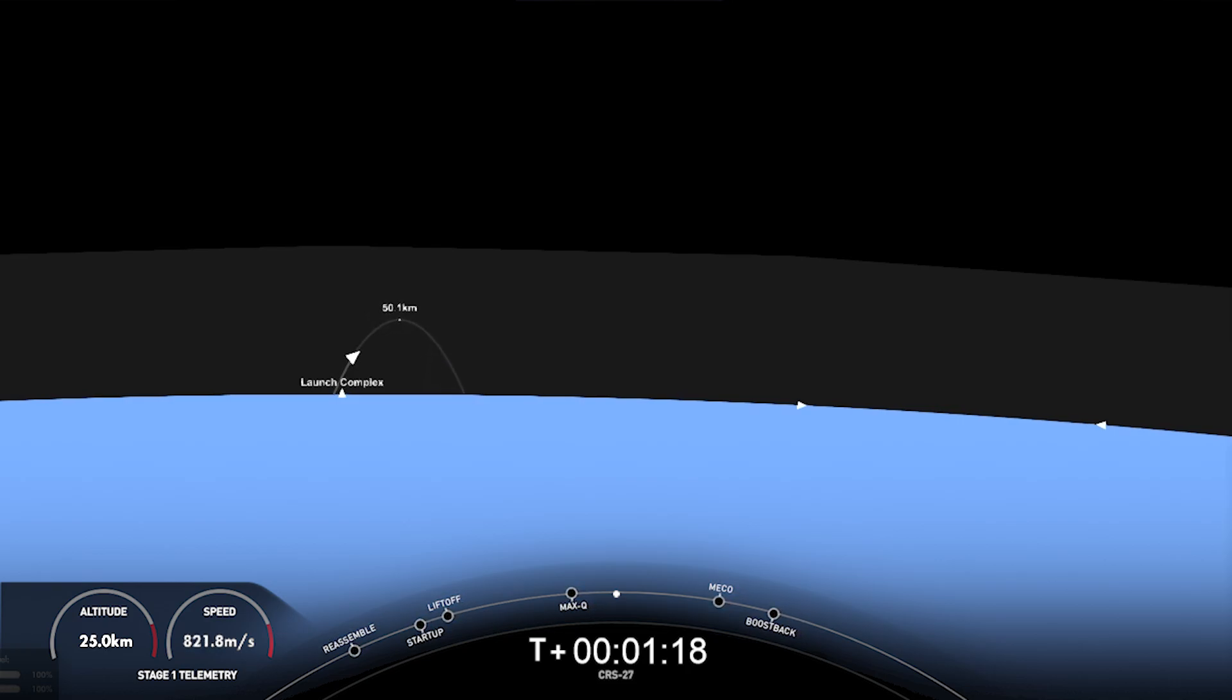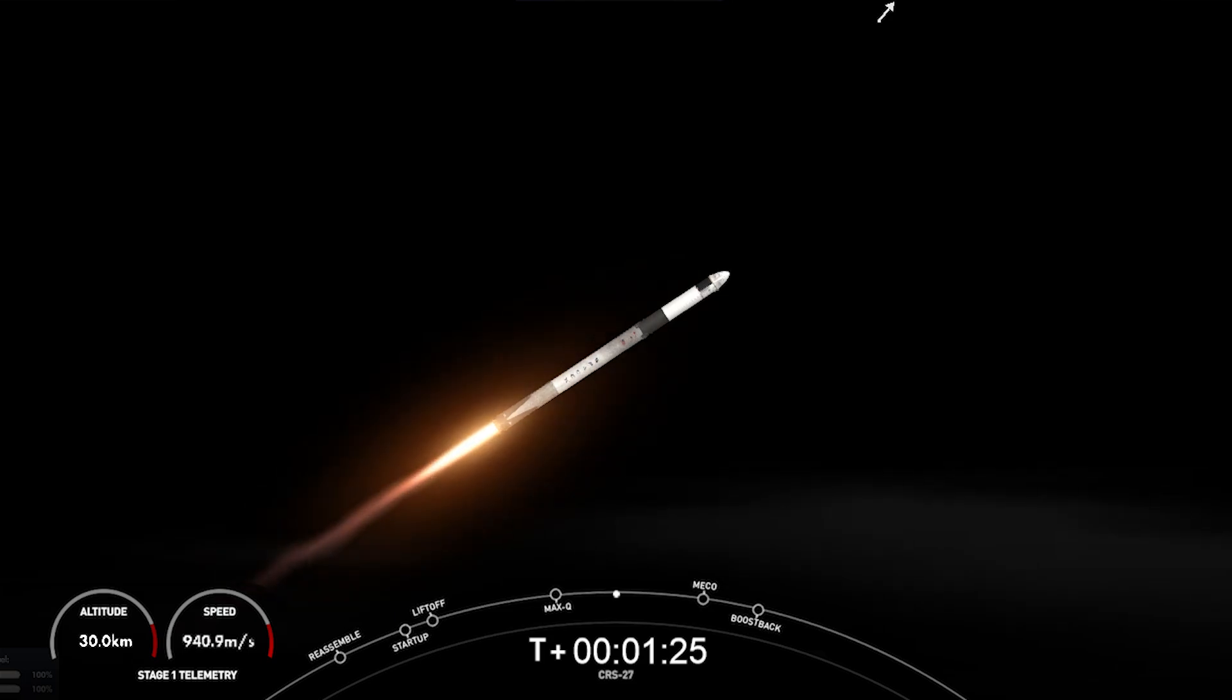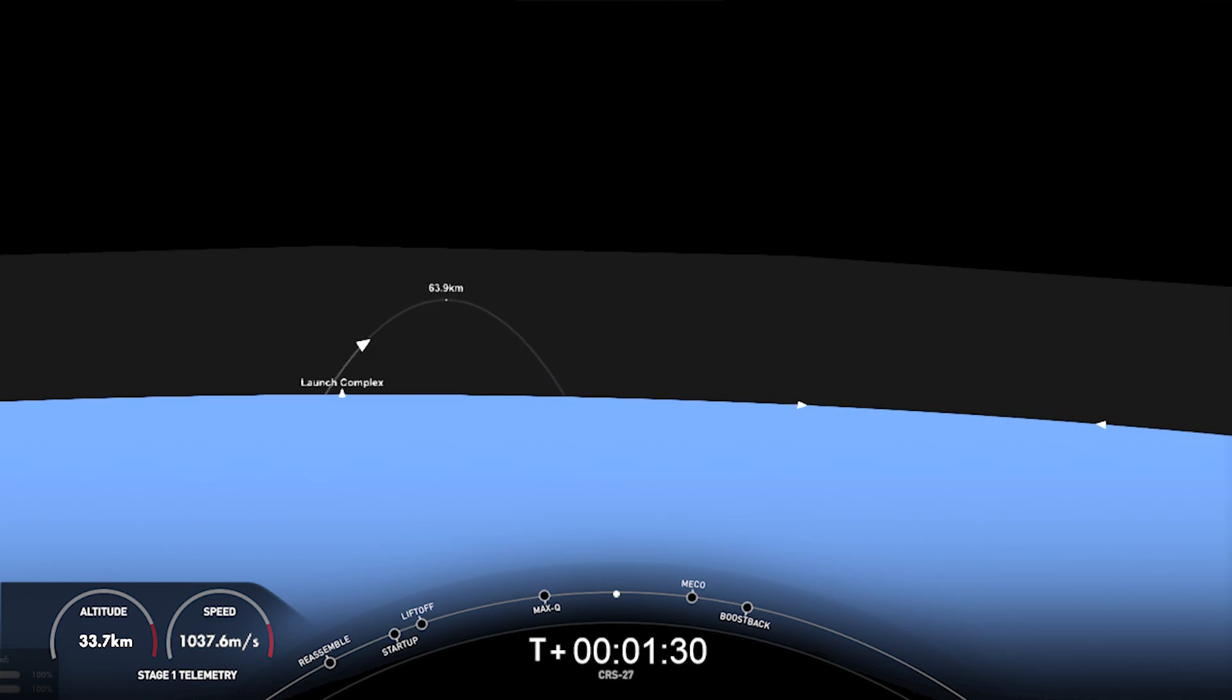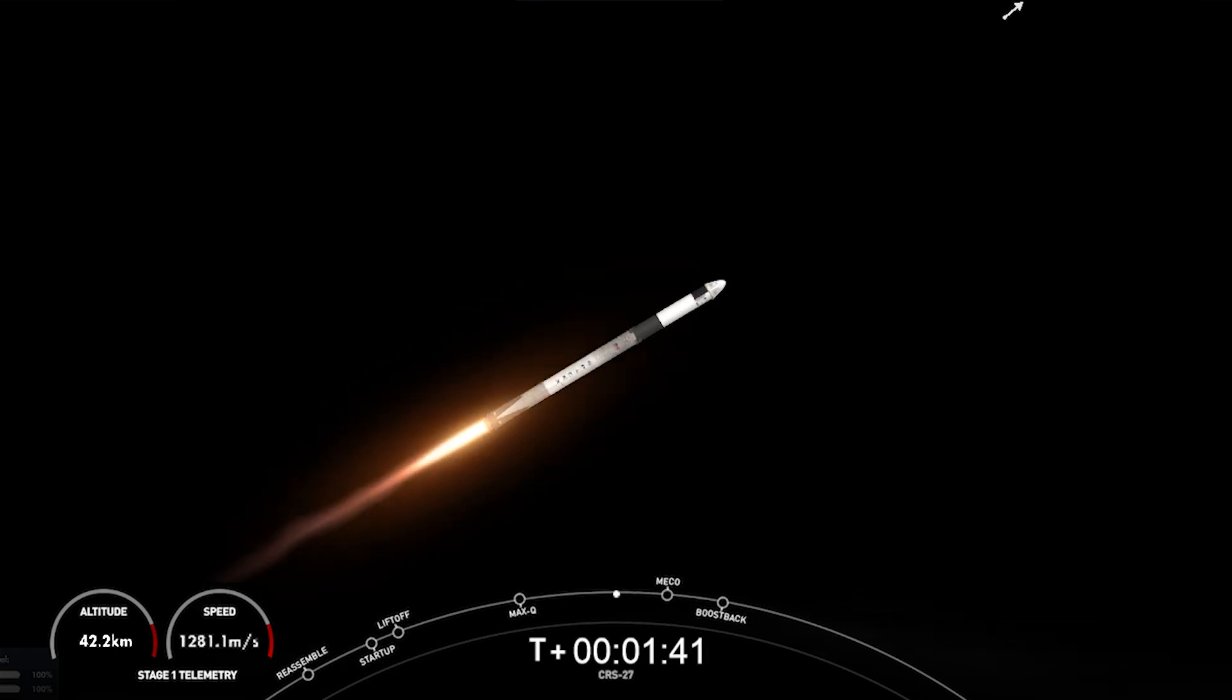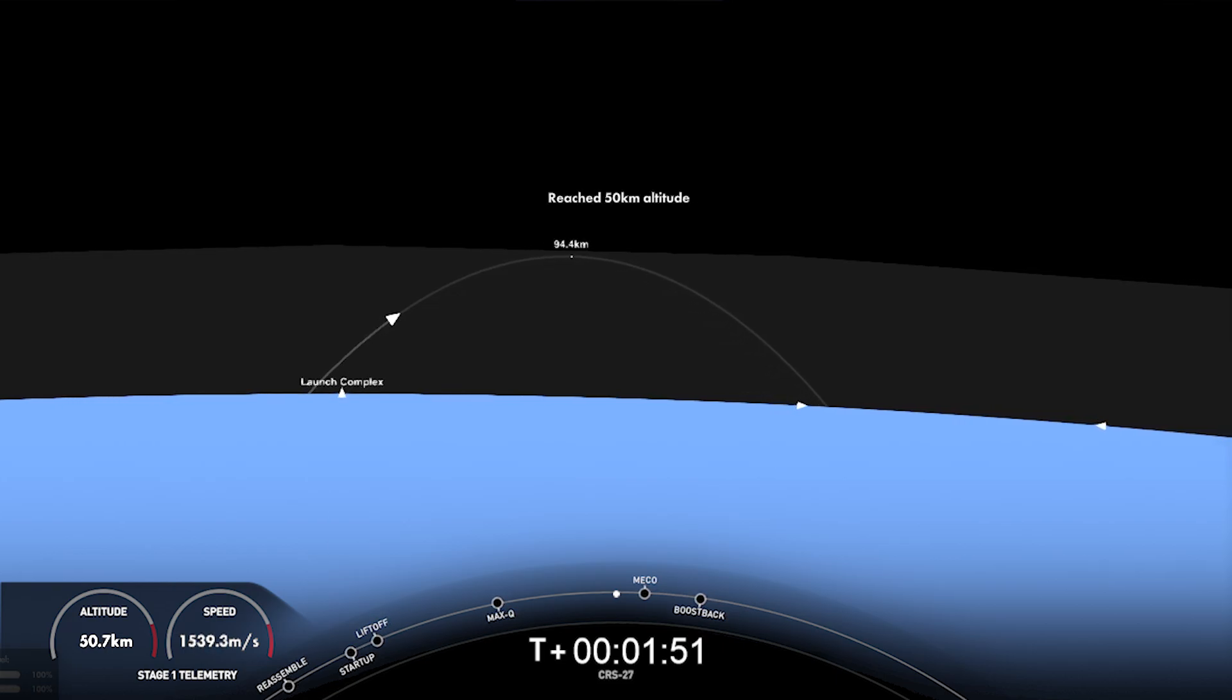Also called out over the nets as stage separation. Then the first stage will flip around to make its way back to its landing site, the drone ship named A Shortfall of Gravitas. The second stage will then ignite its Merlin vacuum engine to boost Dragon to low Earth orbit during SES-1. And the last event is the boostback burn to reduce velocity of the first stage in preparation for atmospheric entry. And this whole sequence will take place over about 30 seconds or so. Now, we should be hearing that callout for main engine cutoff in about 20 seconds from now.